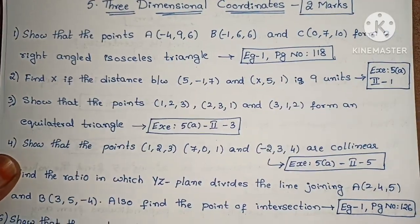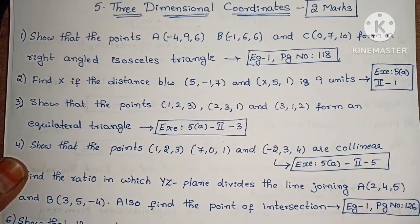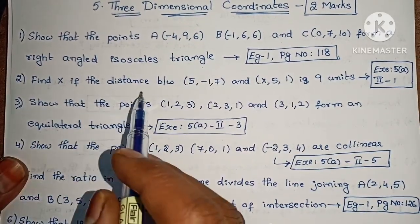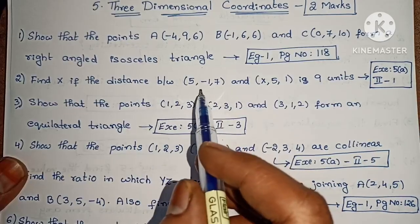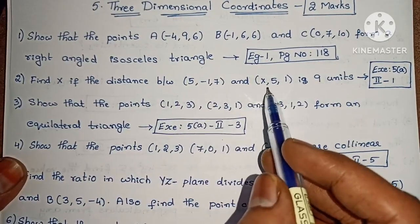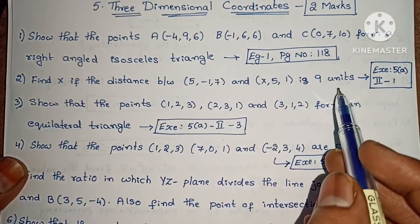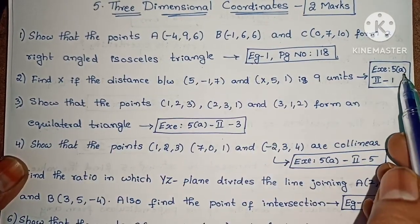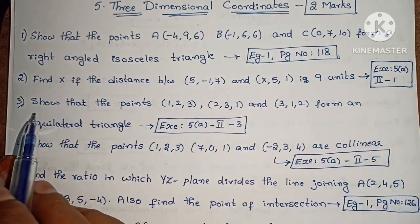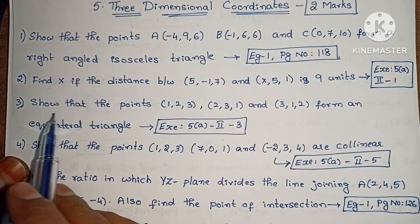Example 1, page number 118. Next, find X if the distance between (5,-1,7) and (X,5,1) is 9 units. This is Exercise 5A, second Roman numeral, first one.